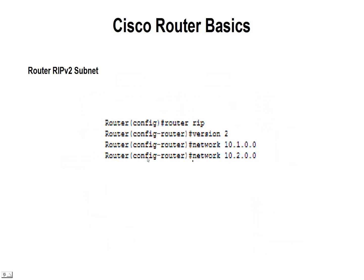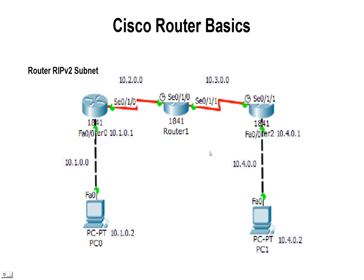Looking at the first router, I'm going to go to my configuration terminal, type in 'router rip', and then as it goes to router config, type 'version 2'. Then I can go ahead and set these networks: 10.1.0.0 and 10.2.0.0. Those are the two networks — 10.1 and 10.2 — that are attached to that router, so those are the networks we need to include so the router can take this information and pass it along to the other two routers.